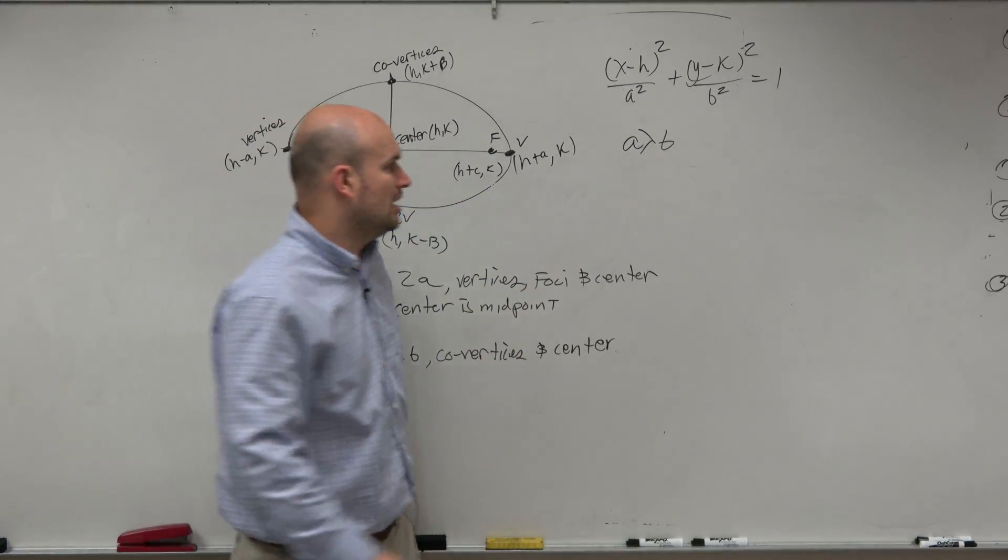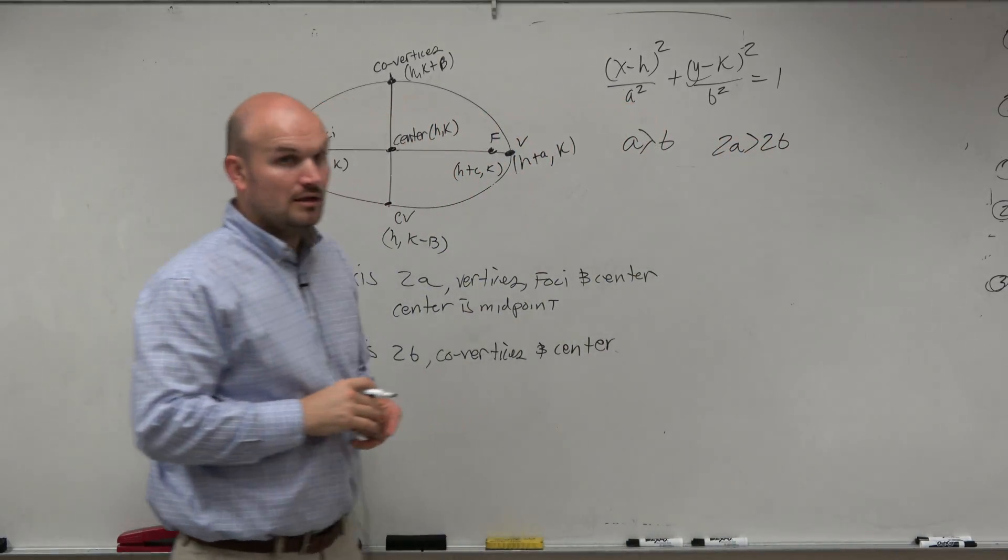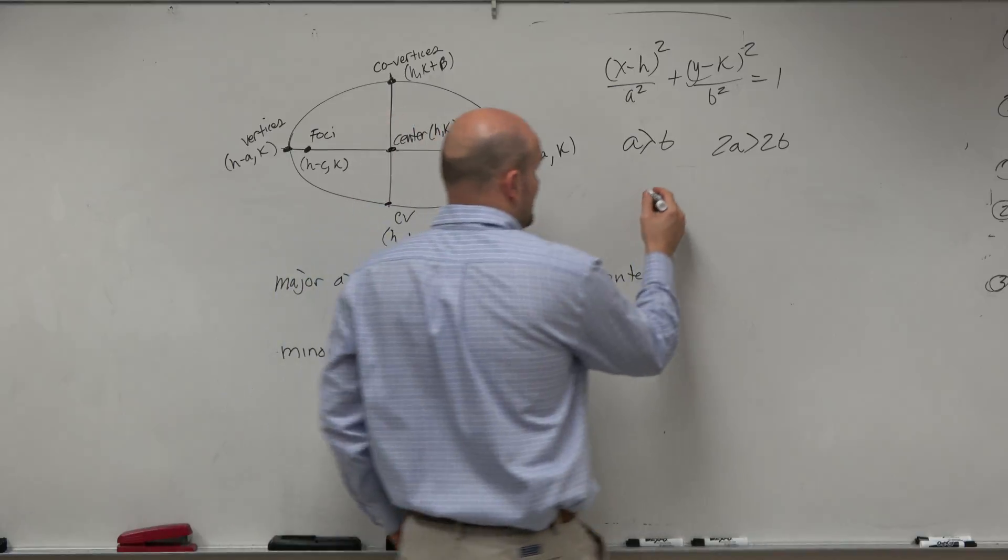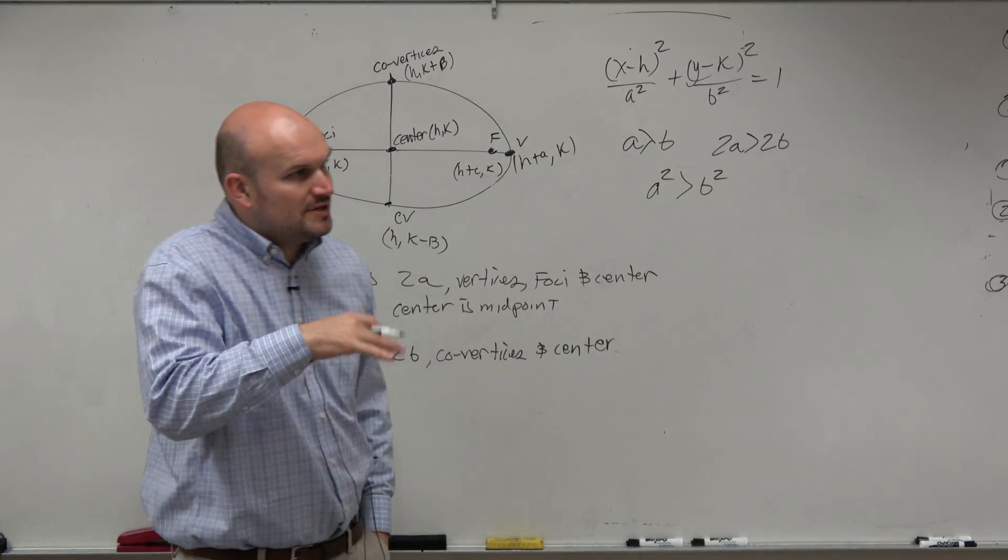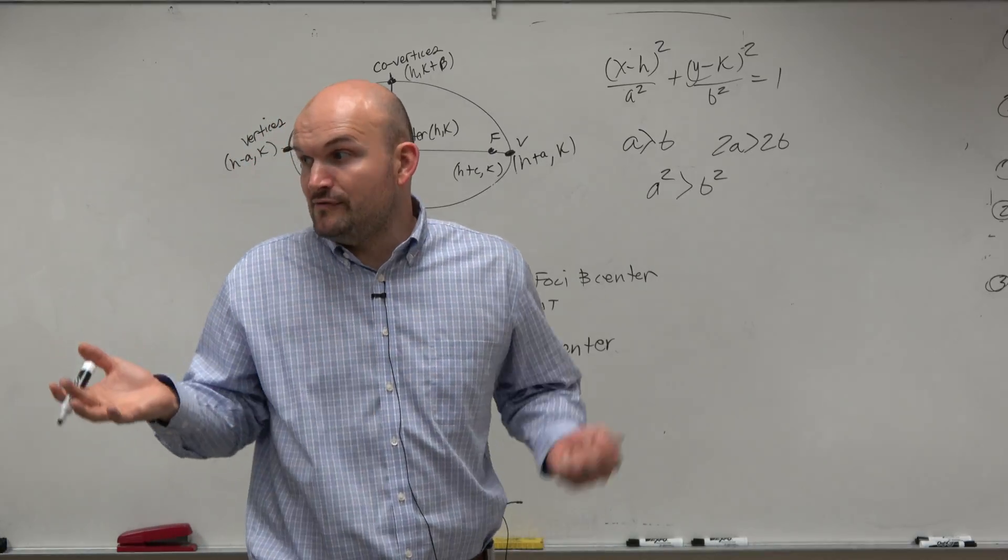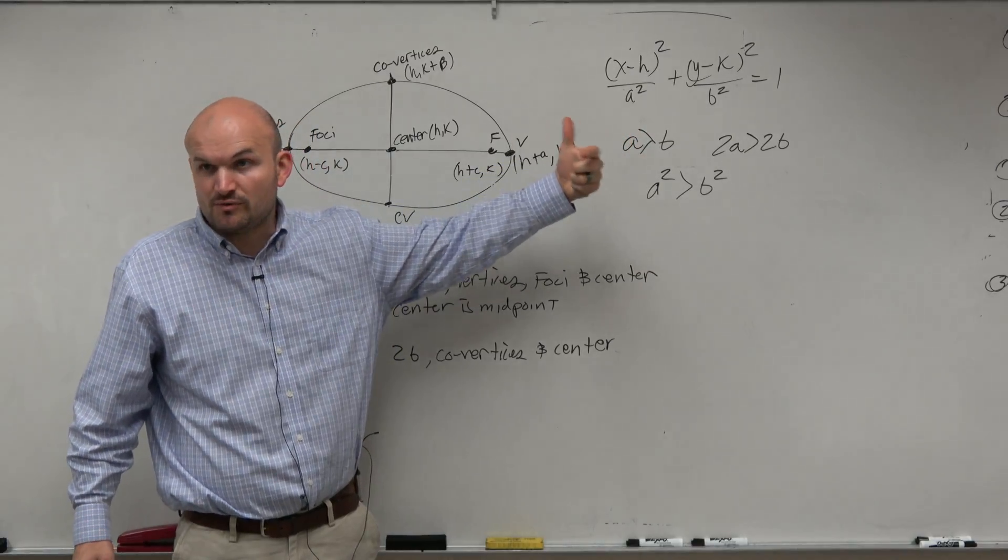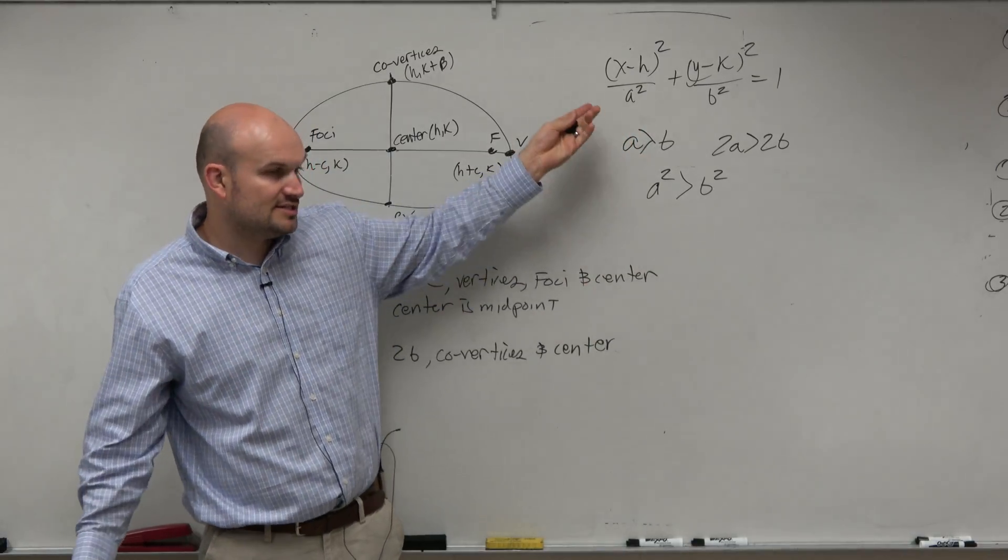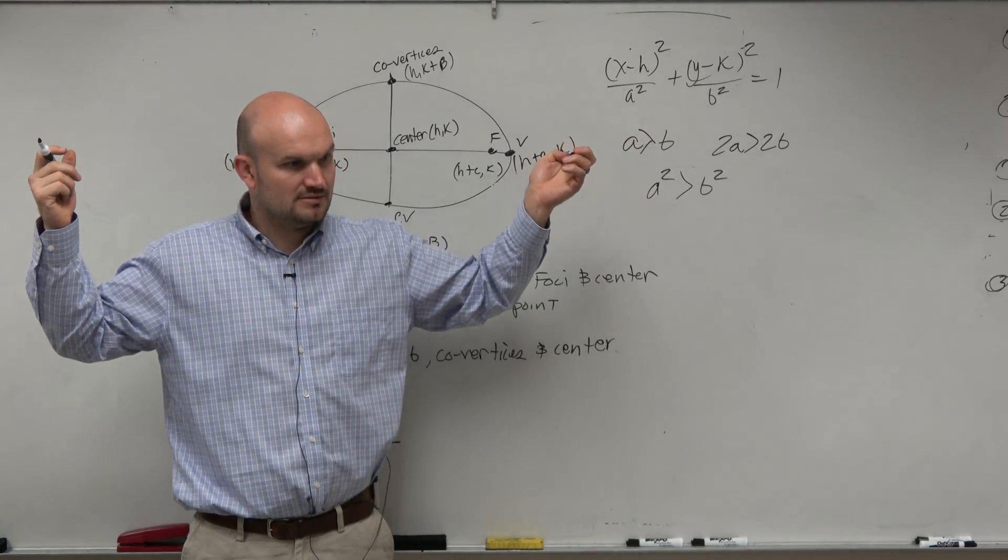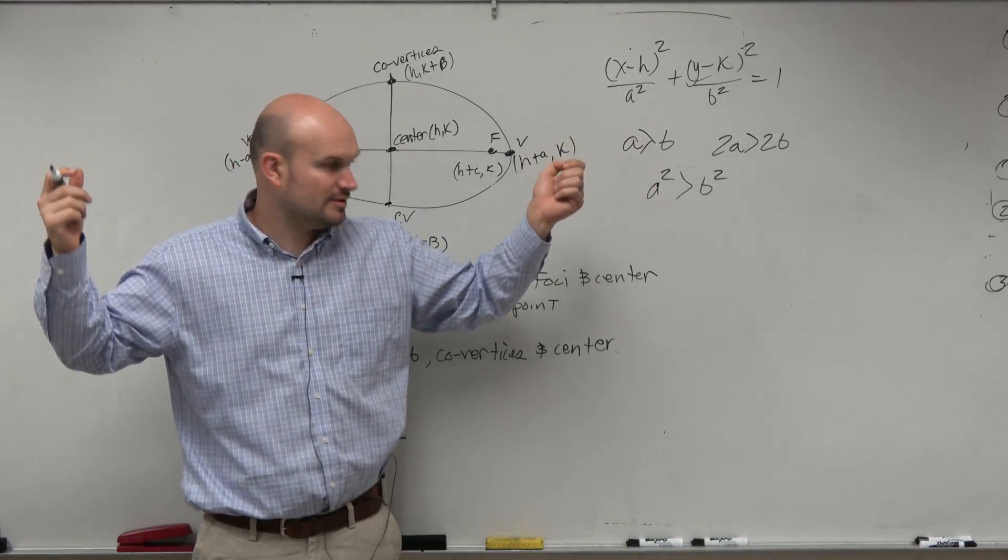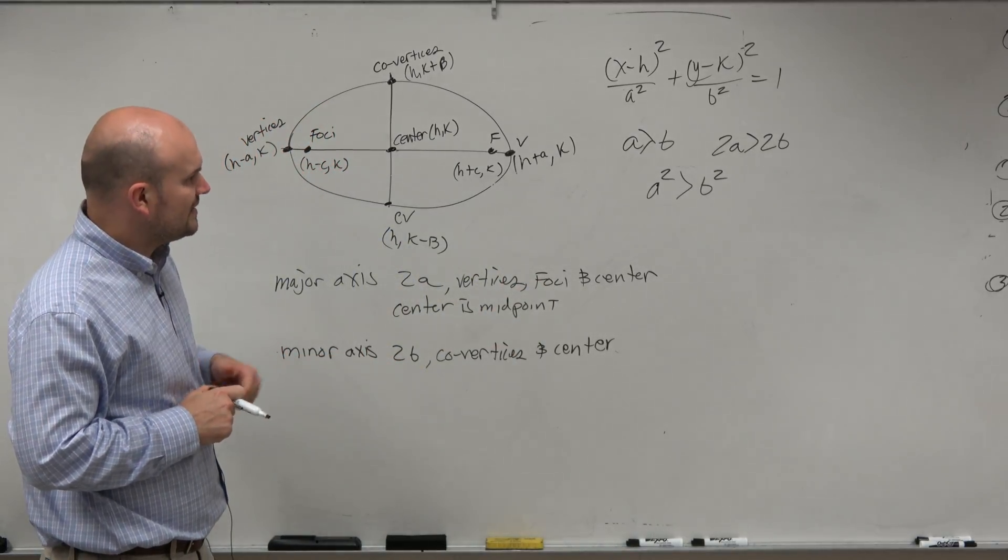Well, then, does that mean that 2a has to be greater than 2b? Yeah. And does that mean, then, that a squared has to be greater than b squared? Yes. And again, from last class period, that was very important. Because if I gave you the equation, I said, what was a squared? You just had to look at the denominator and say, which one's bigger? Because a squared was always bigger than b squared. So you looked at the denominator and said, oh, 25 is bigger than 16. 25 is a squared. Right? Remember?